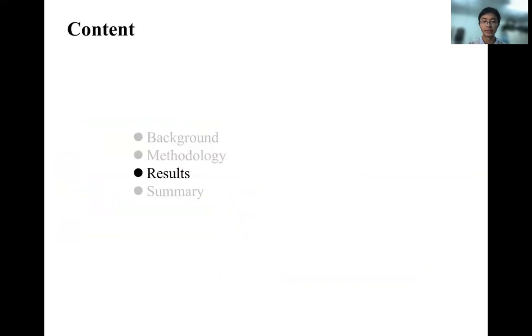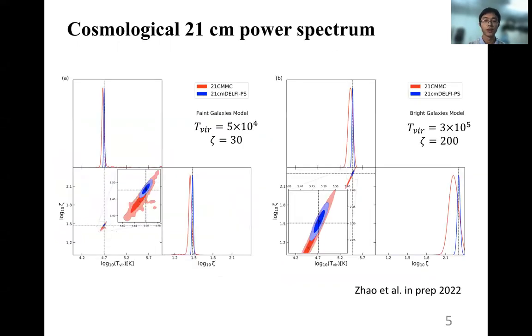So let me present some results. For proof of concept, we intend to infer two astrophysical parameters: the ionizing efficiency and the minimum virial temperature of the halos that host ionizing sources. We first focus on two specific models that both match the Planck constraints on the electron scattering optical depth. The global reionization history is the same, but the reionization in the faint galaxy model is powered by more abundant low-mass galaxies, yet with smaller ionizing efficiency than the bright galaxy model.